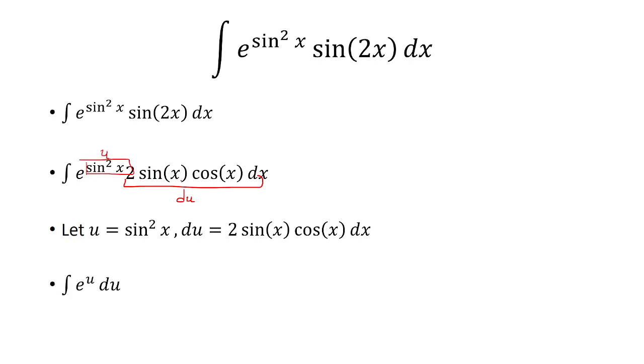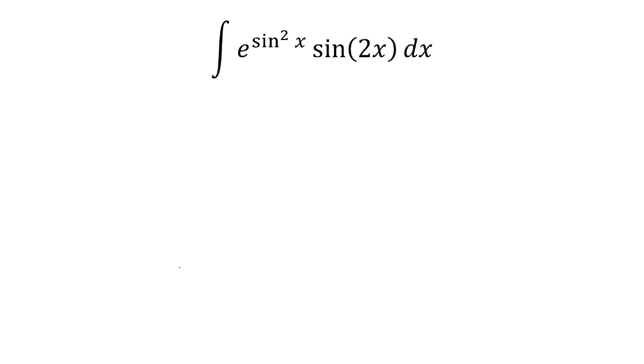So we have e to the u du, which is just e to the u plus c. And we said u was sine squared, so our final answer is e sine squared plus c.